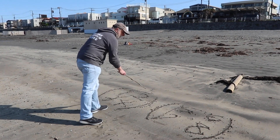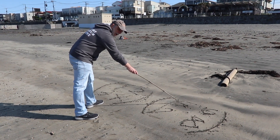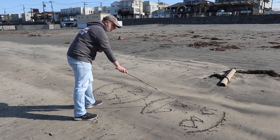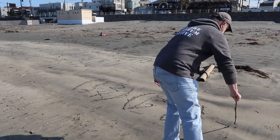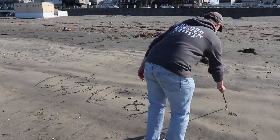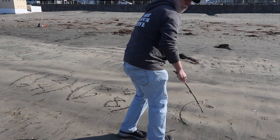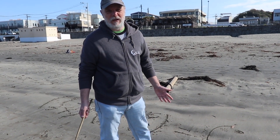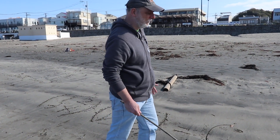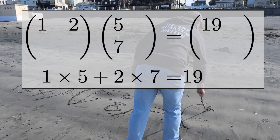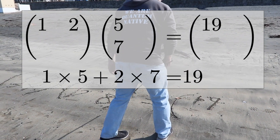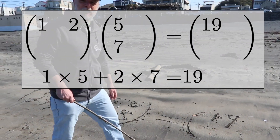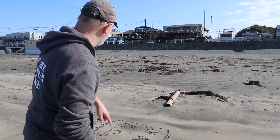So that's going to be 1 times 5 plus 2 times 7. 1 times 5 is 5 and 2 times 7 is 14, so that gives us 19. The first entry in our result matrix is 19 in the upper left corner.